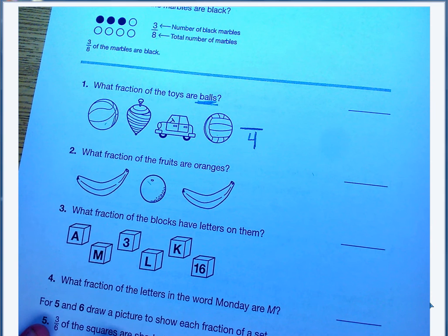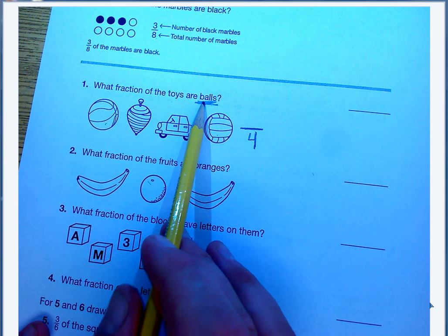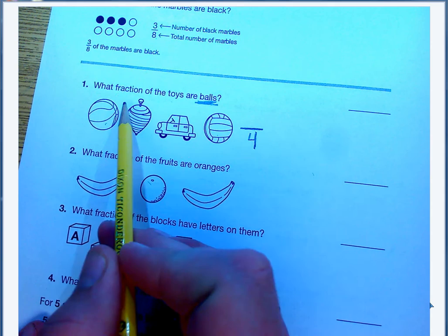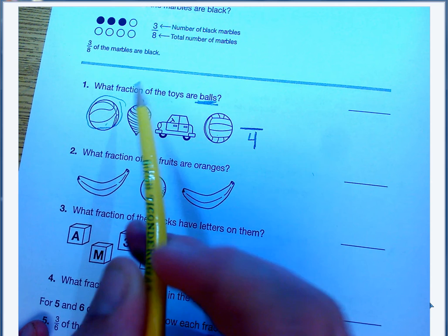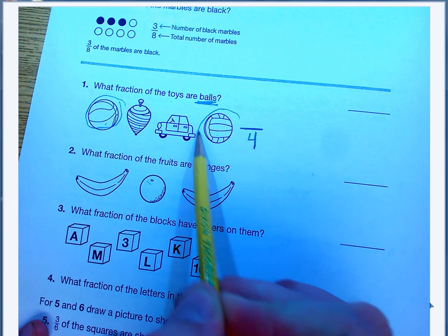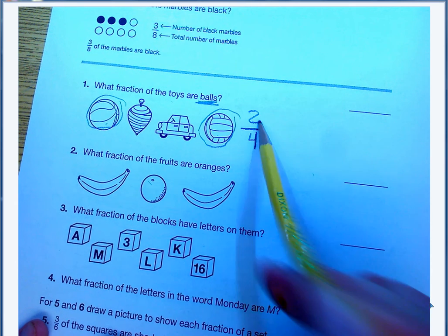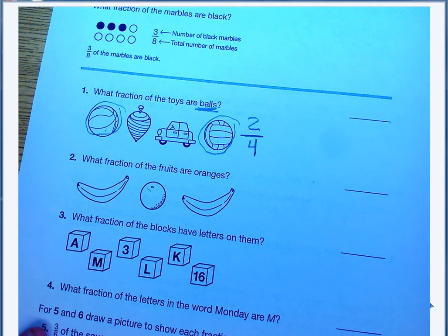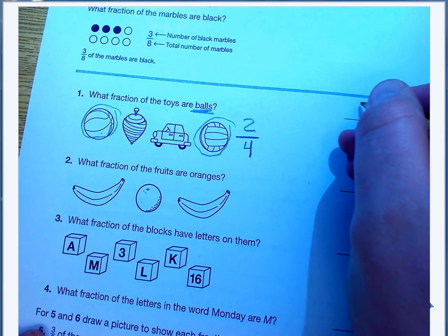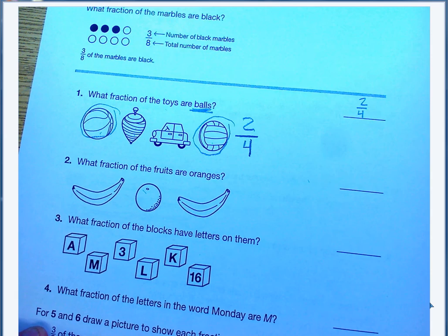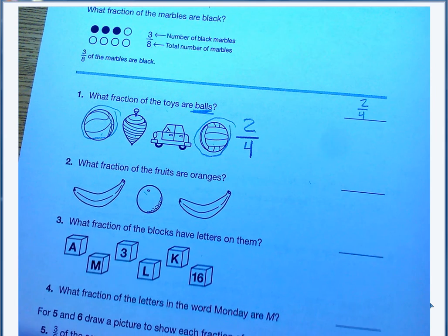Now I need to decide how many of these toys are balls. So I'm looking. This is a basketball. That's 1. Nope, nope, and then a volleyball. So 2 out of my 4 toys are balls. I'm going to put that answer over here. 2 out of 4, or 2 fourths, the correct way to say it, are balls.